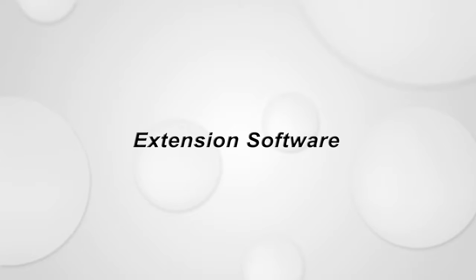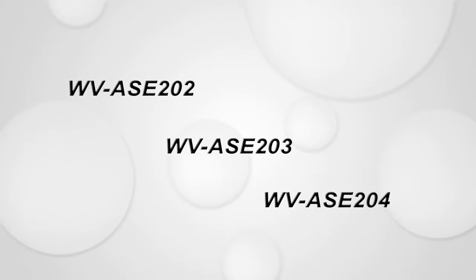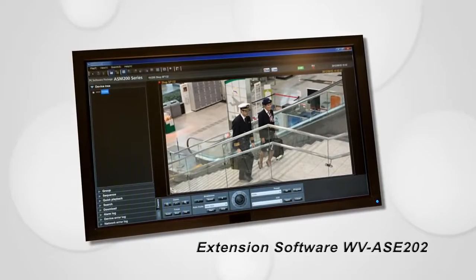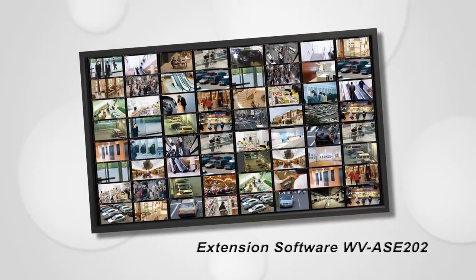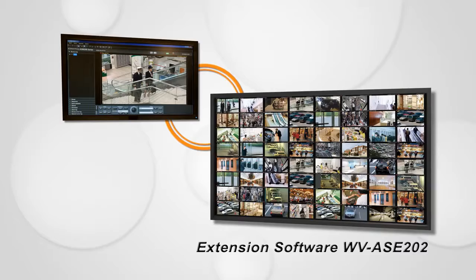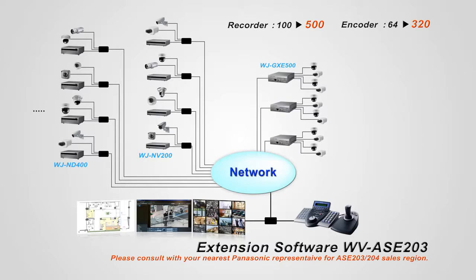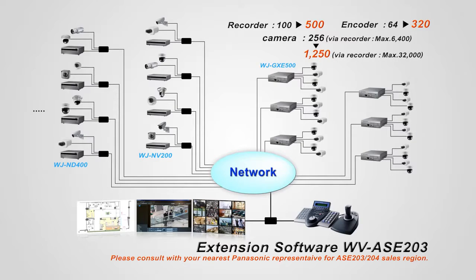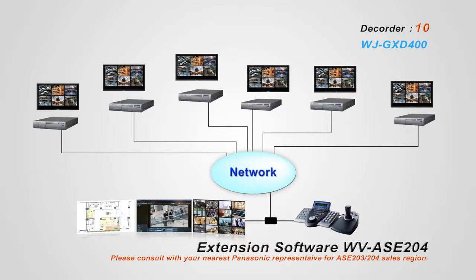ASM200 can be combined with extension software WVASE202, WVASE203, and WVASE204 in addition to WVASE201 as an option for extended functionality. WVASE202 is a dedicated extension software capable of displaying pictures of 64 cameras in one monitor, effective for integrated monitoring of many cameras on a big screen. With the addition of WVASE203, connectable recorders can be increased to 500 units at maximum, and encoders can be increased to 320 units at maximum, making possible integrated control and operation of large-scale systems including conventional analog cameras. Further, by the use of WVASE204, decoder WVGXD400 can be connected with 10 units at maximum.